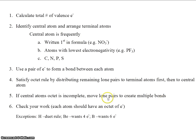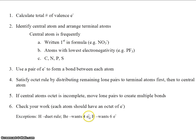And the last step, step 6: check your work. Make sure that each atom has a complete octet — octet means 8. There are a couple of exceptions: hydrogen follows the duet rule and only wants 2. Beryllium only wants 4, and boron only wants 6. All of the rest typically want 8.